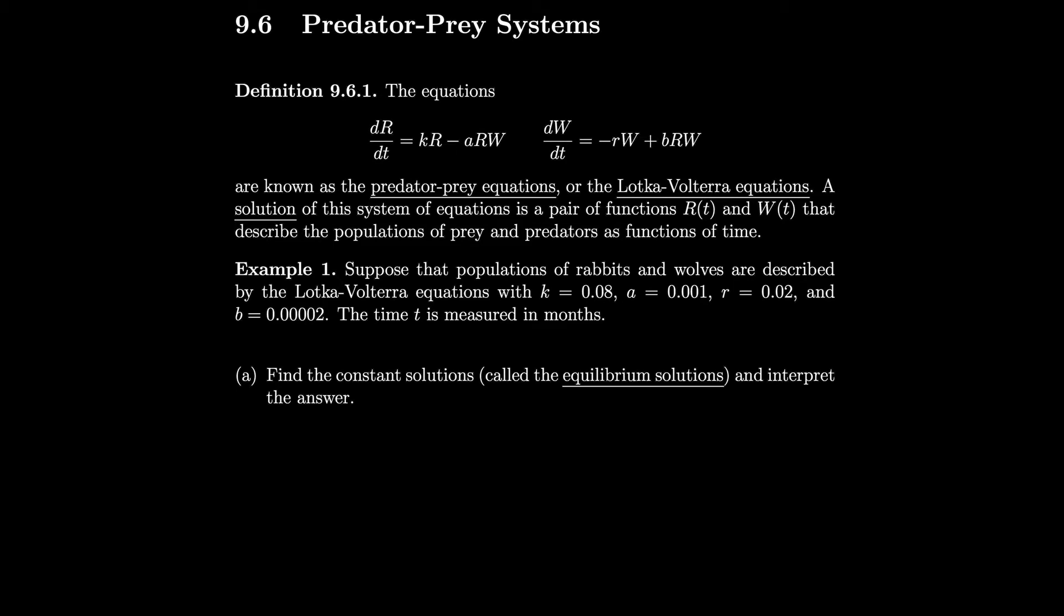If you think about a population of rabbits, those would be prey for dr/dt. If there are no predators, they'd probably just grow exponentially. So it would look like some constant k times the population of rabbits. However, in natural conditions, there are some predators. So we have to subtract off some number of rabbits, times some constant, times however many wolves or predators are going to eat those rabbits.